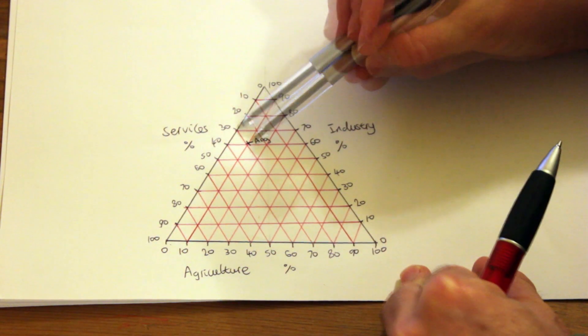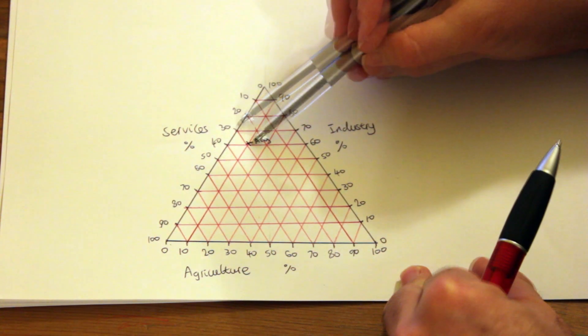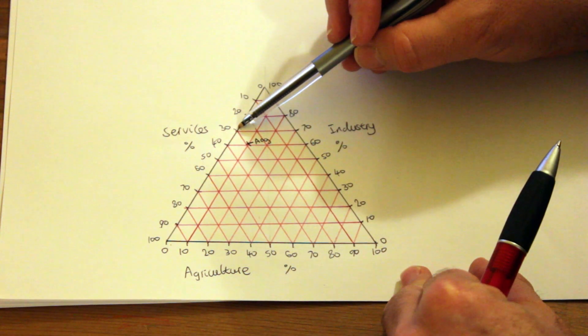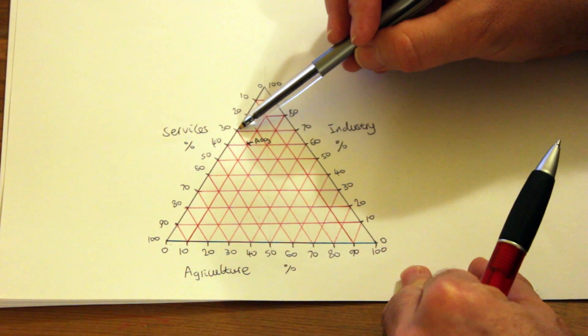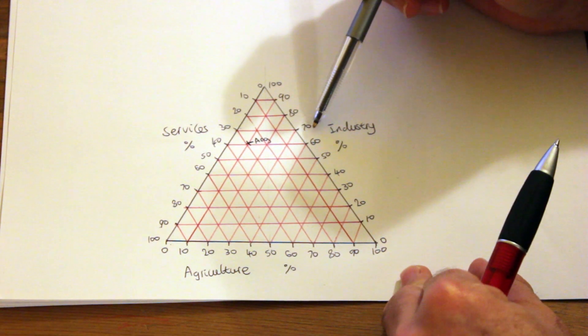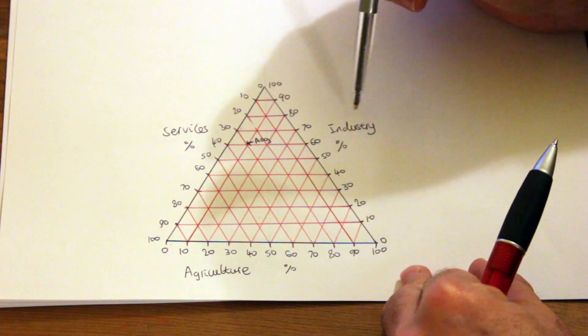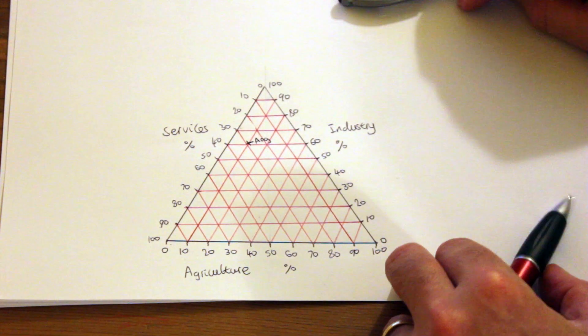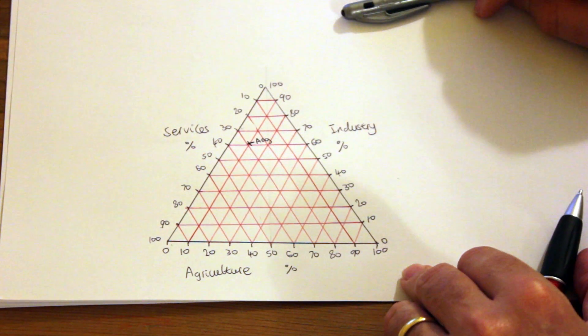Now if I follow this line here to the services scale, you'll see that it roughly comes to about 28 percent. If I add that 28 percent to the 10 percent and the 61 percent that I did earlier, it of course comes to 100 percent. Now I will plot the data for the other 11 countries.